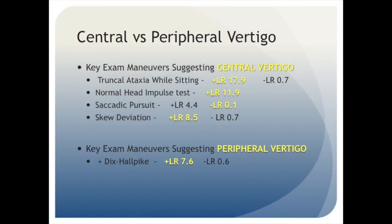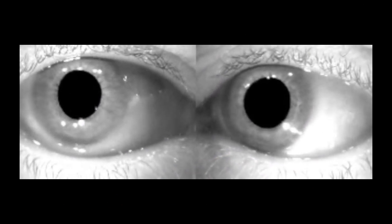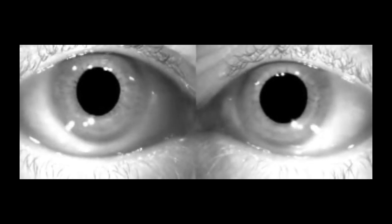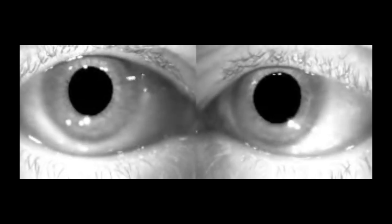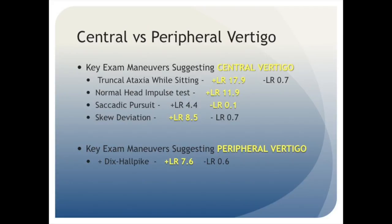The next exam maneuver we'll discuss is saccadic pursuit, which has a very good negative predictive value with a negative likelihood ratio of 0.1. This exam maneuver is elicited when you ask the patient to follow your fingers with their eyes. As they do so, you'll see a saccadic pattern, with their eyes essentially trying to catch up to your finger rather than a smooth motion. Note that the absence of saccadic pursuit — meaning that the patient is able to smoothly follow your finger with their eyes — suggests a peripheral cause of vertigo, with a negative likelihood ratio of 0.1.